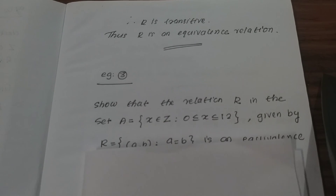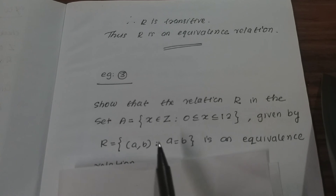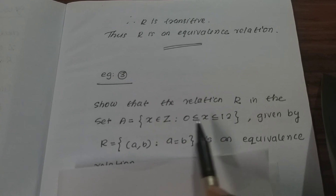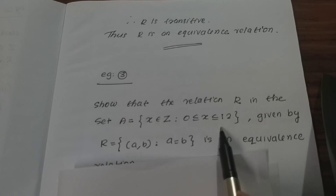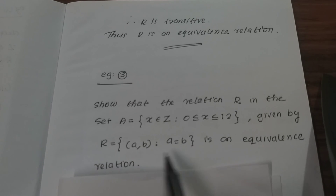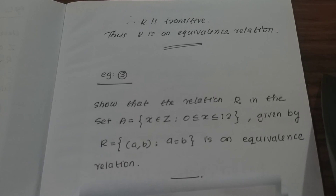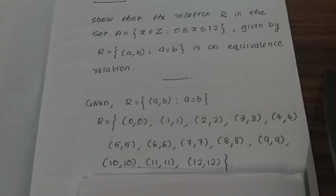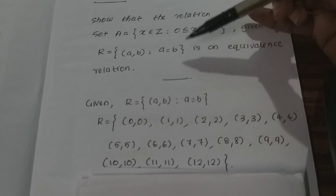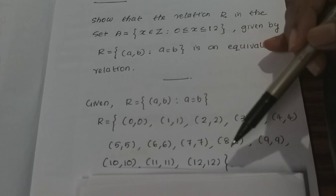Example 3: Show that the relation R in the set A = {x ∈ Z : 0 ≤ x ≤ 12}, that is {0, 1, 2, 3, ..., 12}, given by a = b, is an equivalence relation. So pairs like (0,0), (1,1), and (12,12) are all elements of R.